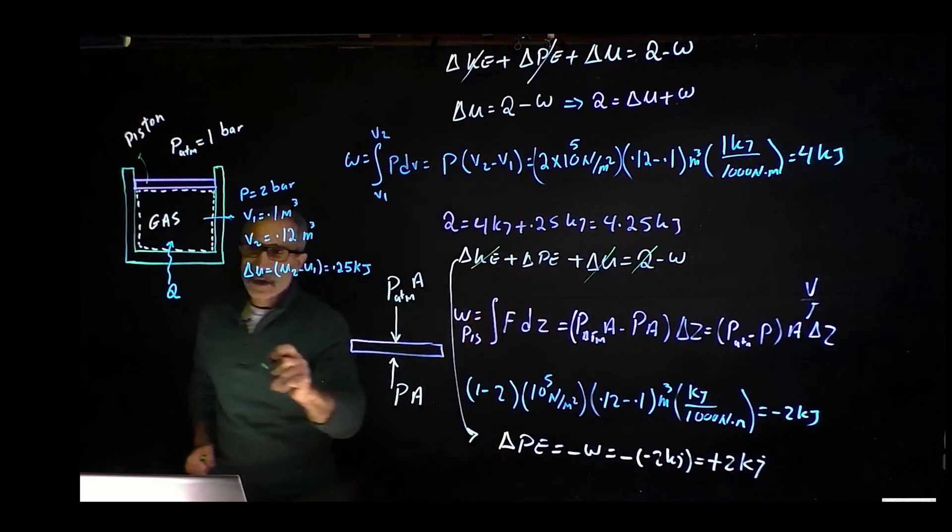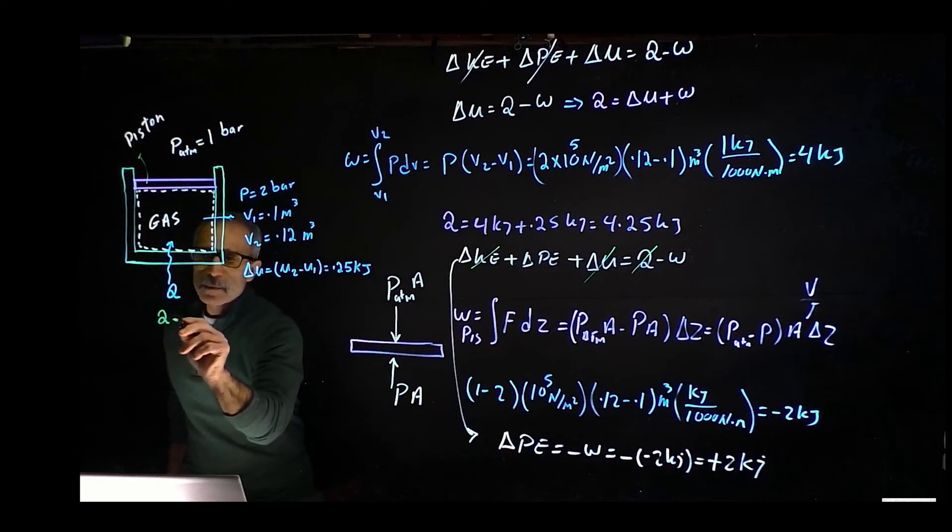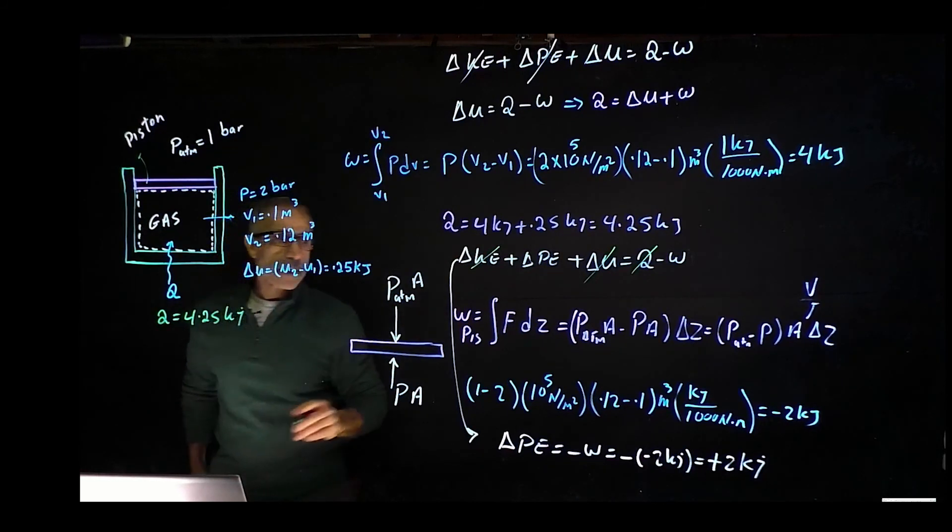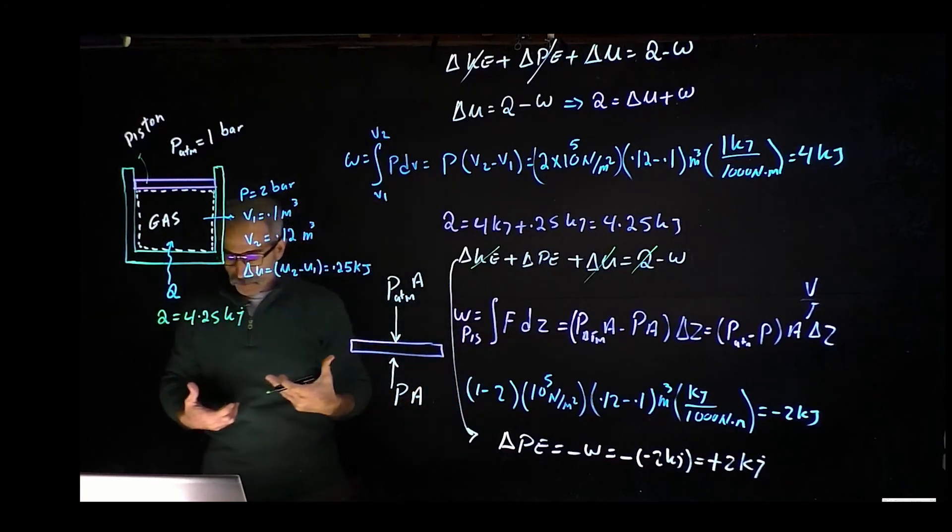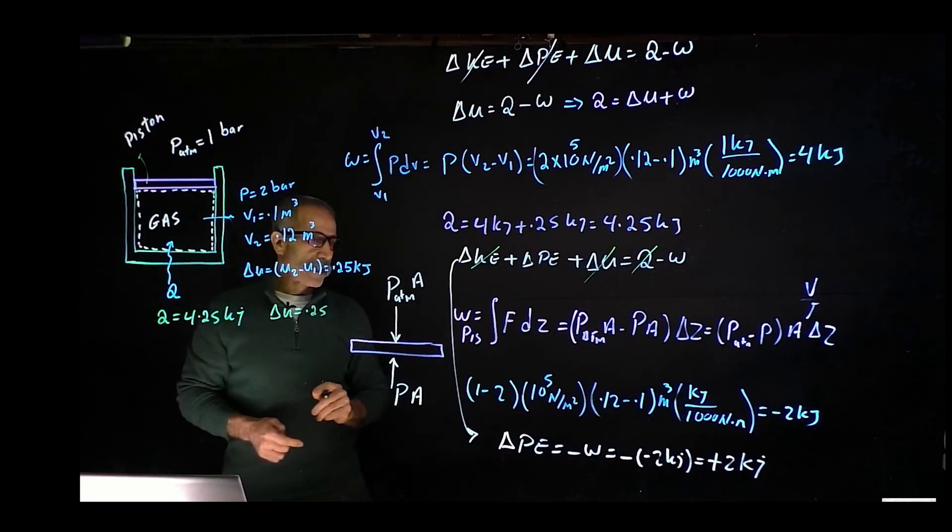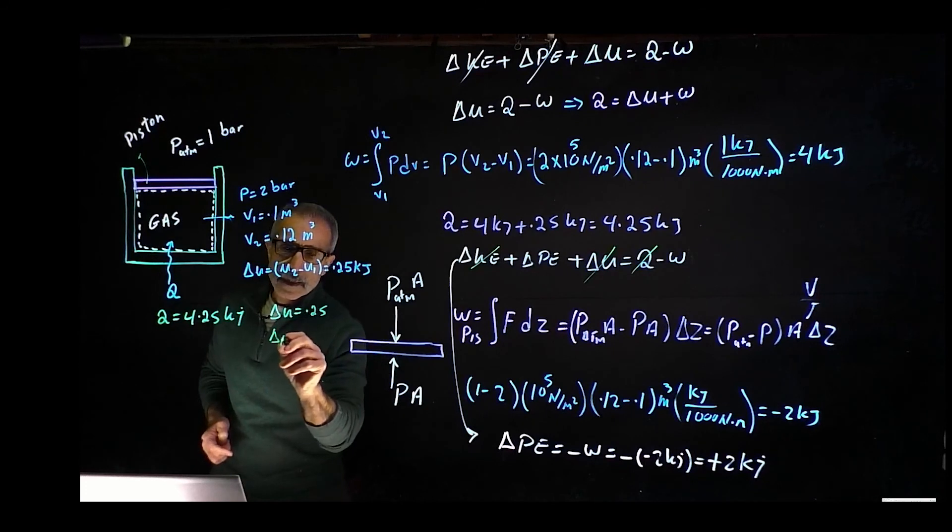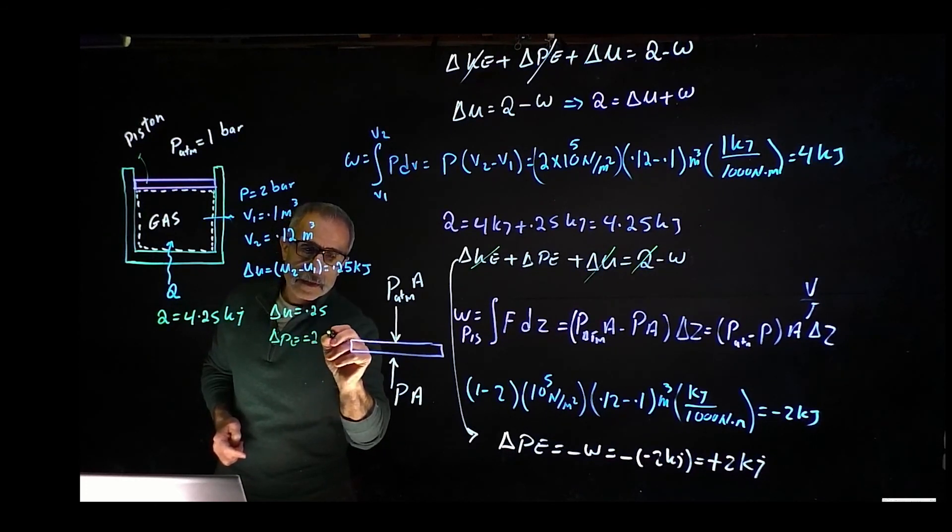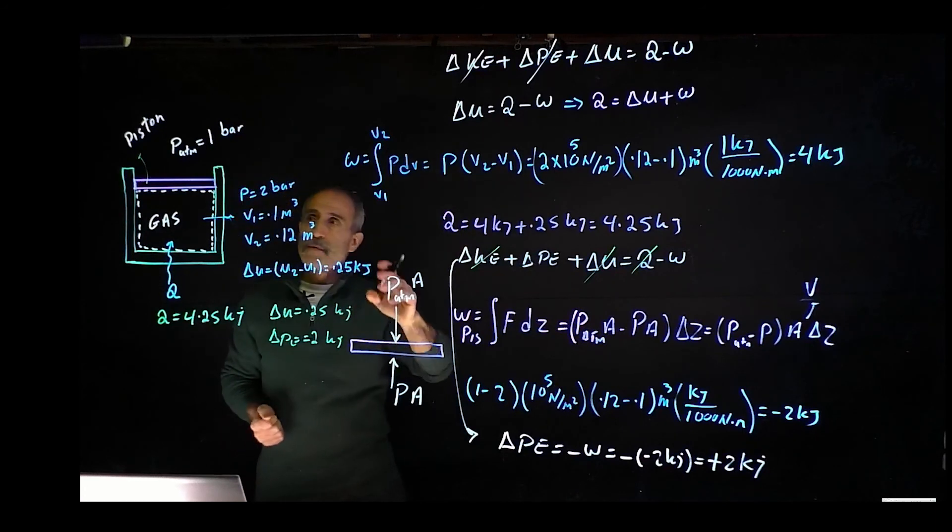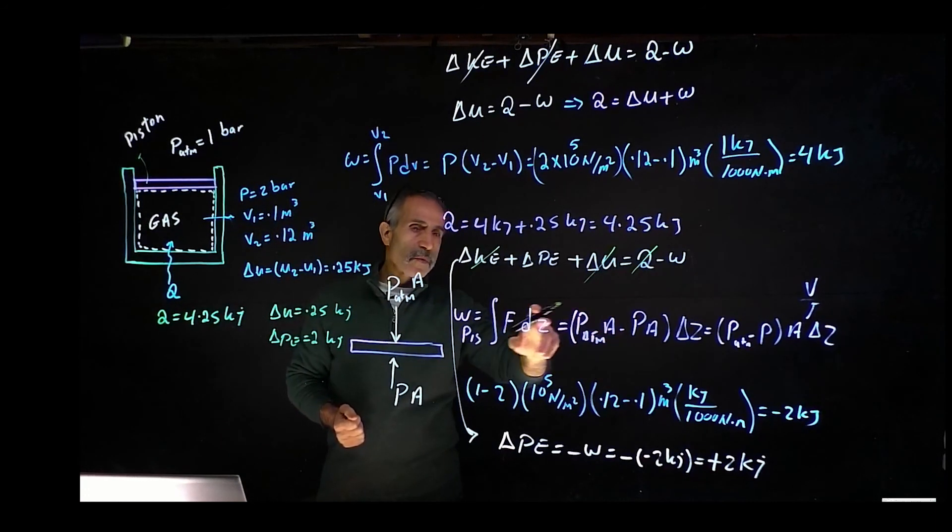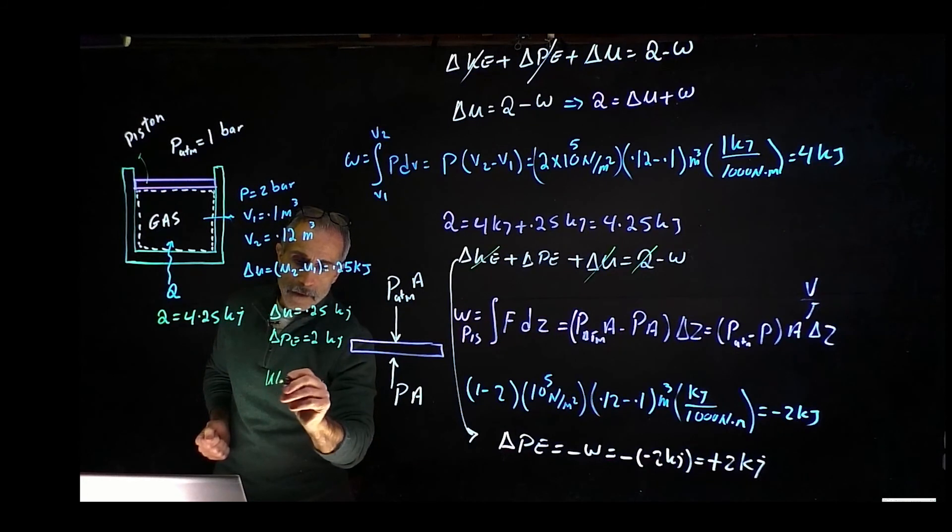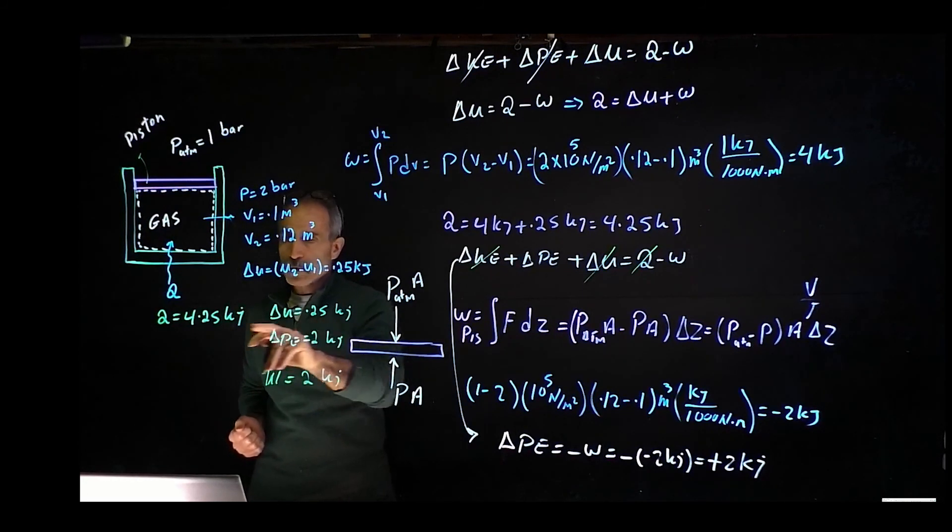So when we look at the whole system, really, and if we look at the whole system, we had Q came out to be, input Q came out to be 4.25. Then we had the result came back in form of a delta U, came out to be 0.25, and then we had delta PE came out to 2 kilojoule. And then we had transfer work to the system from the atmosphere pressure, work came out to 2 kilojoule. So all of this, 2 plus 2 is 4, 4.25 they balance out.